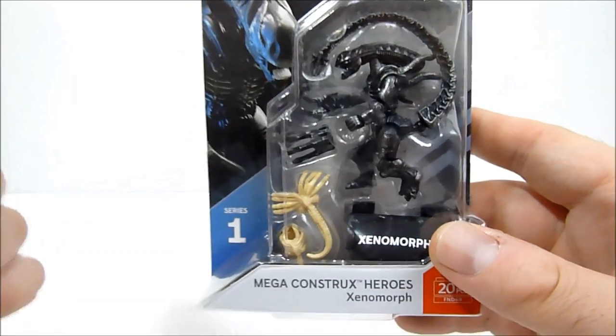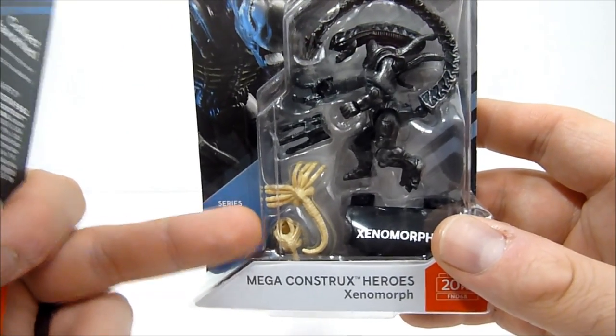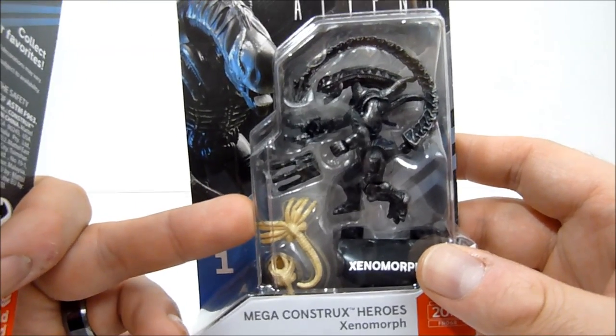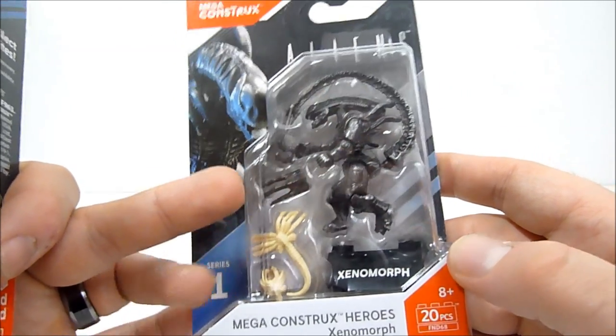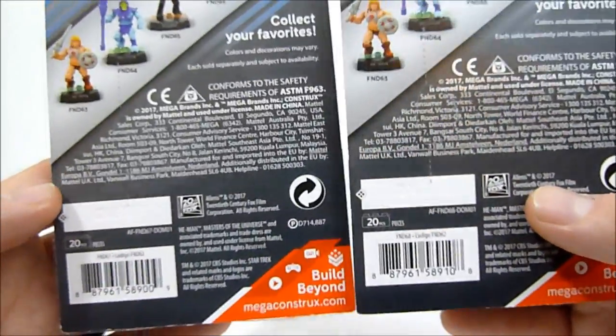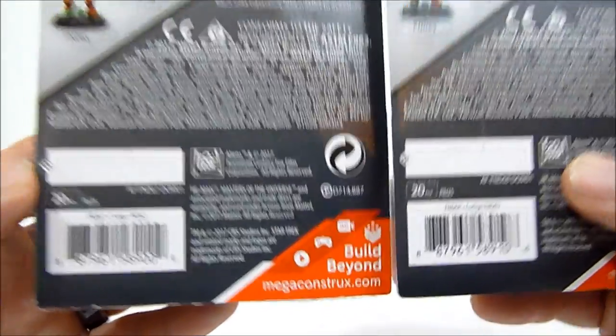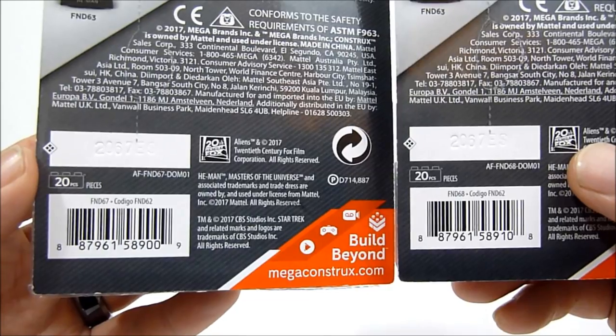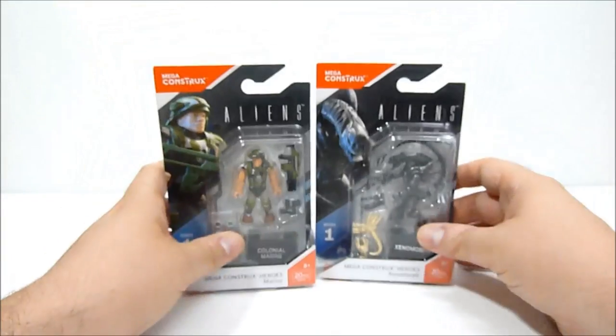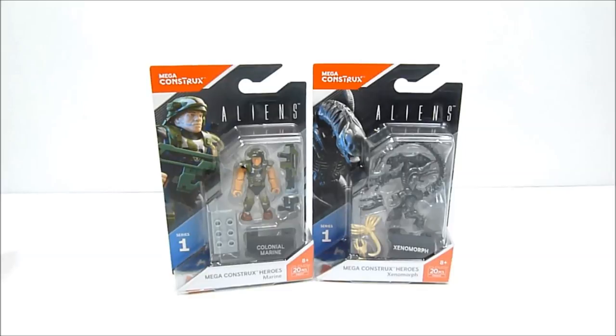The alien comes with two facehuggers: one posed to go over a micro figure's head, and one that's just splayed out as if it's running towards you. The alien also comes with these nice big claw pieces. I'm gonna put the UPCs right up here so you can check them out, take a screenshot, and find these guys at your local stores.